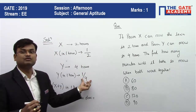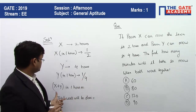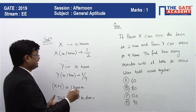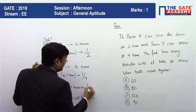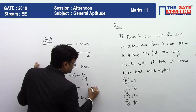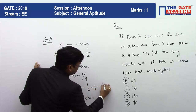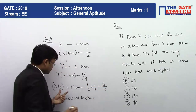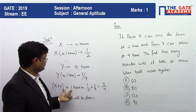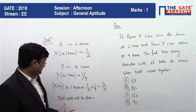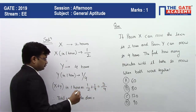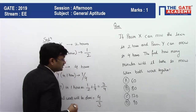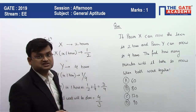If X and Y work together, in one hour they will do one-half plus one-quarter, which equals three-fourths of the work. Since they complete three-fourths of the work in one hour, the total work will be done in four-thirds hours.